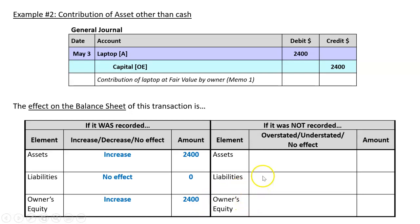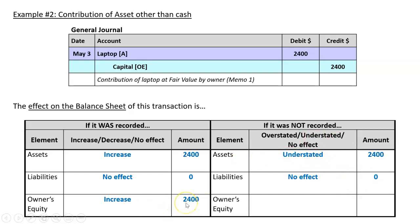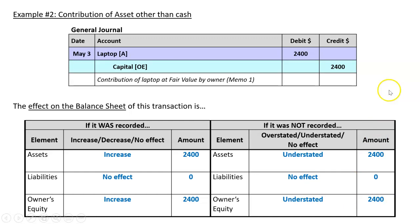But then we get that dreaded question: what if it was not recorded? Well, assets should have gone up but they didn't because we didn't record it, so assets would be understated by $2,400. The effect on liabilities would be nothing - no effect. Owner's equity should increase by $2,400, so if it doesn't, it's too low - understated by $2,400. Always check that our words balance: asset understated $2,400 equals liabilities no effect plus owner's equity understated $2,400. Our words balance.